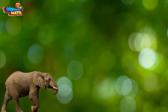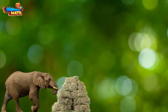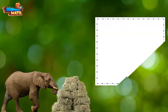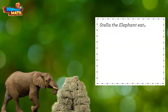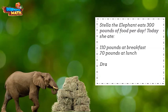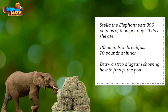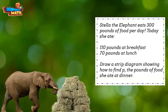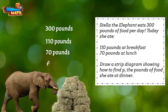Let's try another. Colby and Zoe were most excited to visit Stella the elephant at the zoo. Stella eats 300 pounds of food per day. Today she ate 110 pounds at breakfast and 70 pounds at lunch. Draw a strip diagram showing how to find p, the pounds of food she ate at dinner. These are all the quantities we are given in this problem. Can you find which quantity represents the total amount and which ones represent the sum of parts?